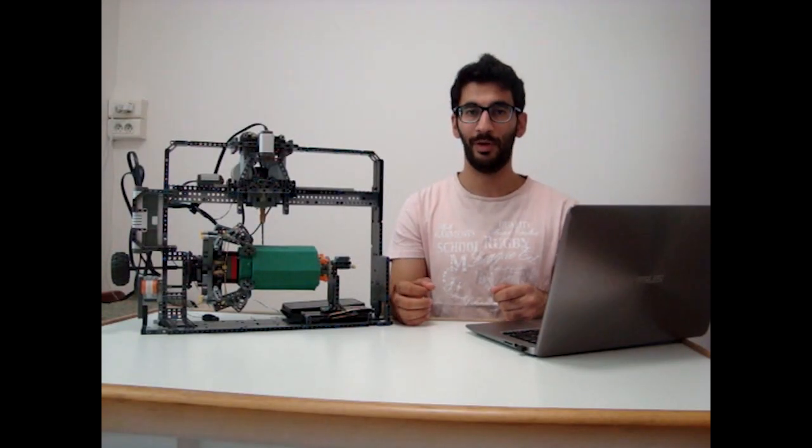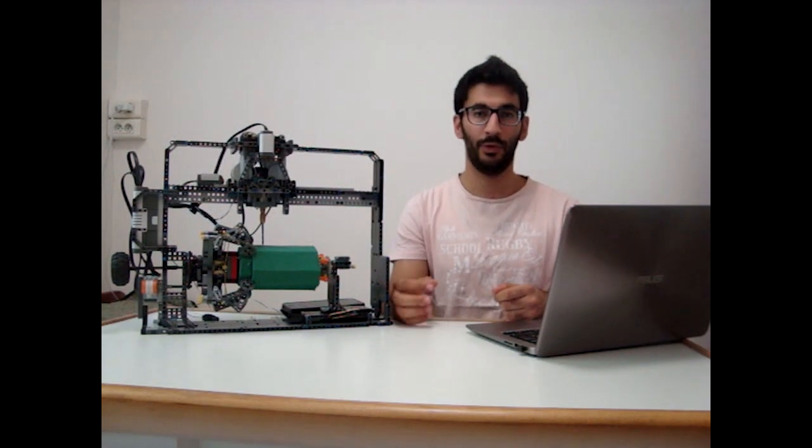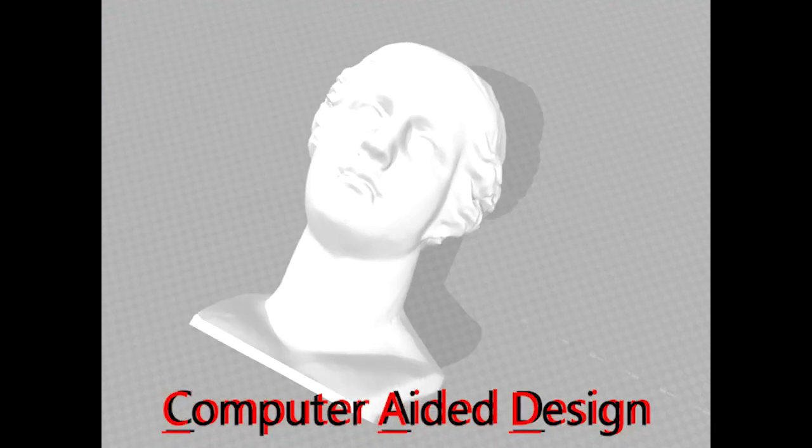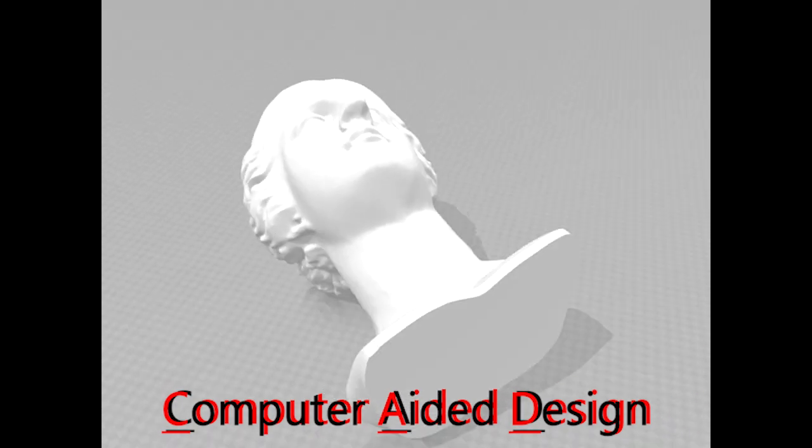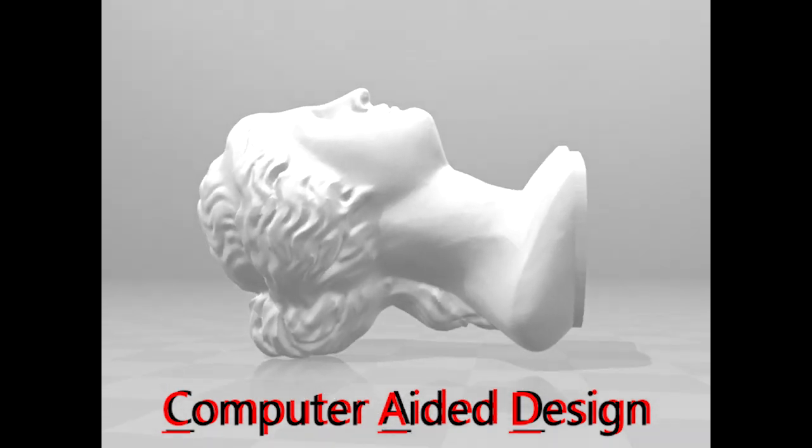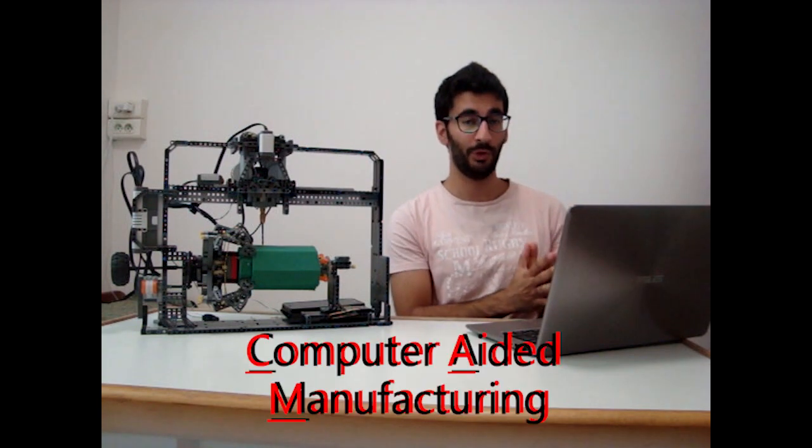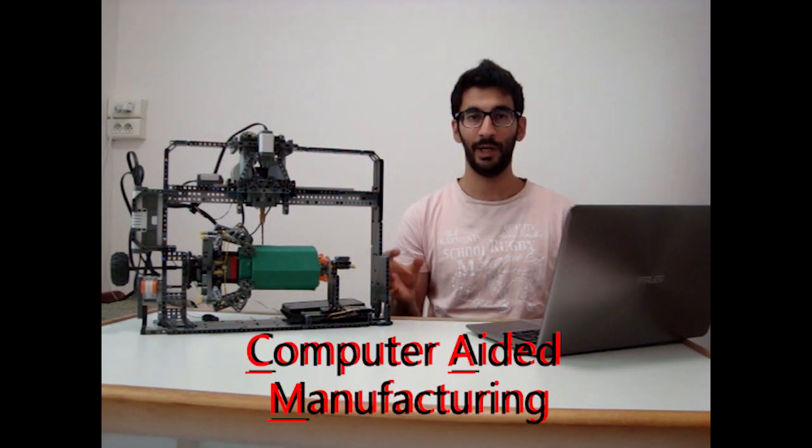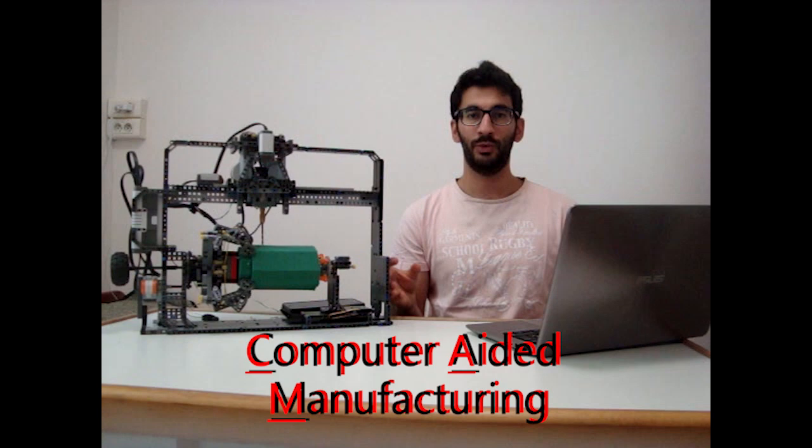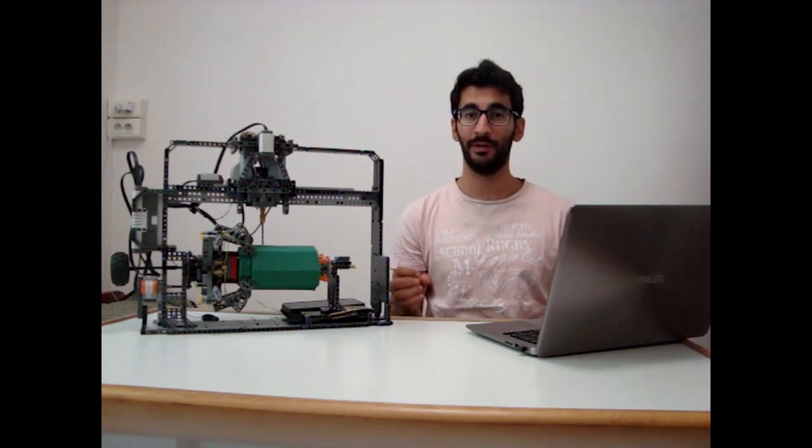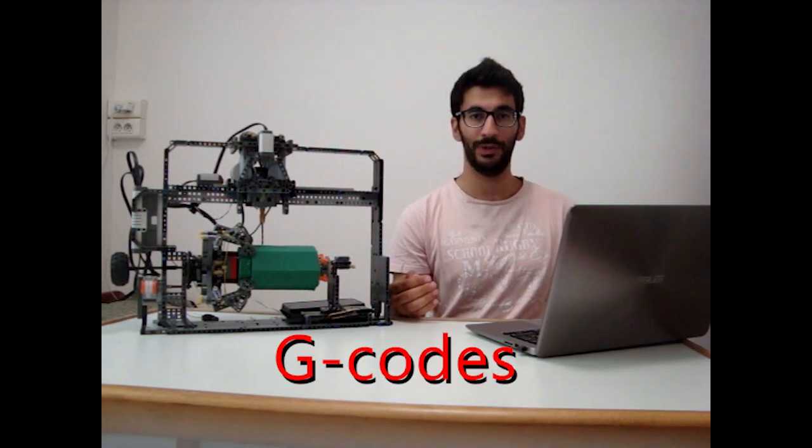The process of fabricating a replica goes like this. First, we should have a CAD model. We can download it from the internet or build it ourselves. Step two: we take the CAD model to a CAM program. Basically, the CAM program turns the design into a language understandable by the machine. We call it G-Code.